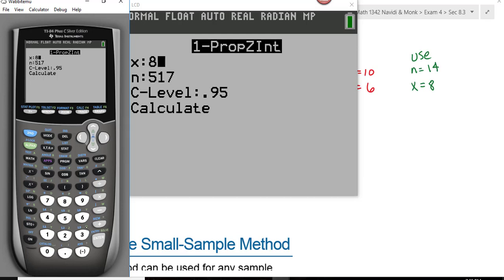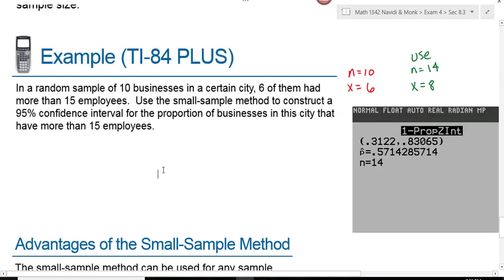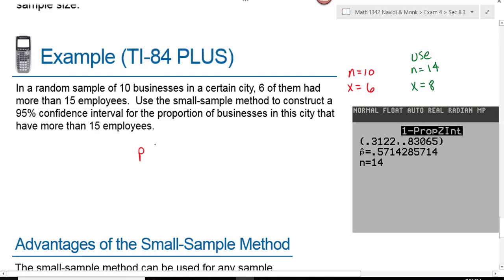For X, we're going to use 8. For N, we're going to use 14. Our confidence level is 95%, and this gives us the output. What we would put in for our confidence interval for the population proportion is 0.312 and 0.831.